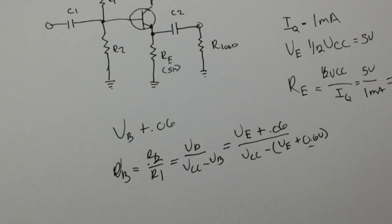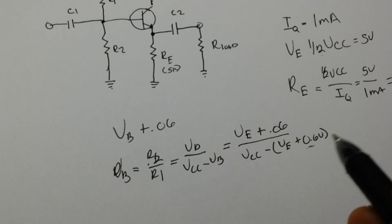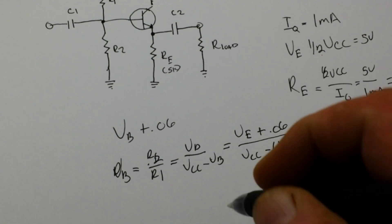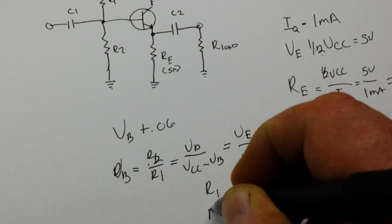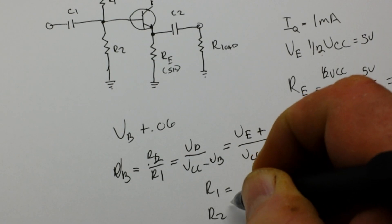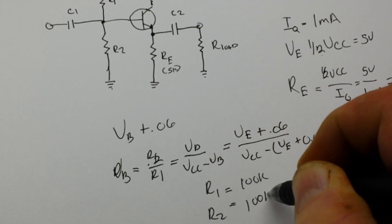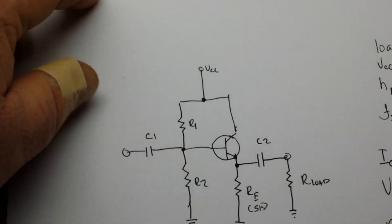We basically want them to be at least 1 tenth or so of our DC input resistance at the base. This will prevent the voltage divider's output from lowering under load conditions. So we're just going to let them be equal. We're going to say R1 and R2 are both equal to 100k.